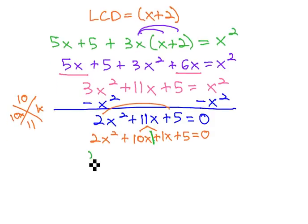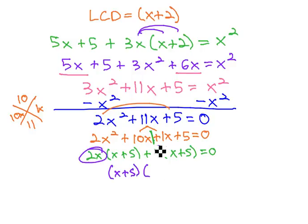Factoring out of the left side, we can take 2x, leaving x + 5, and on the right side 1, leaving x + 5. We now have (x + 5), the common binomial, times (2x + 1) = 0.